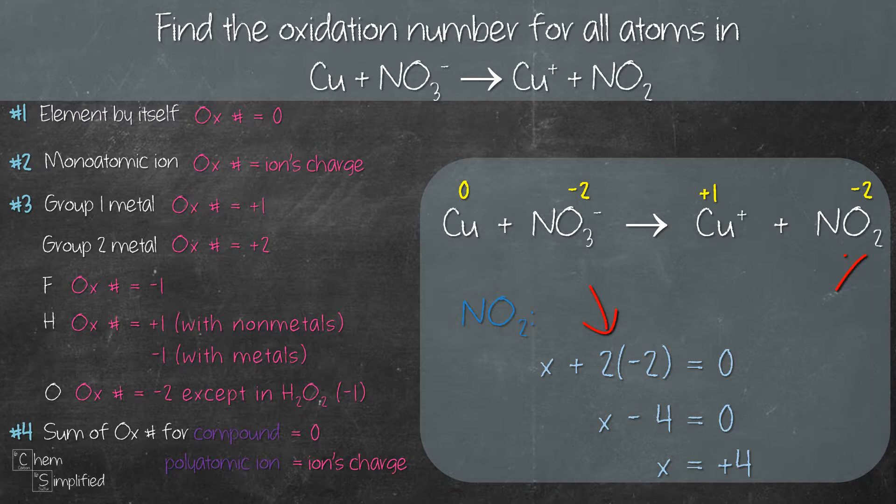We multiply by two because there are two oxygens in NO2, and in the bracket we have negative two because that is the oxidation number of oxygen. We equate the sum to zero because according to rule number four, the sum of oxidation numbers for a compound is zero.